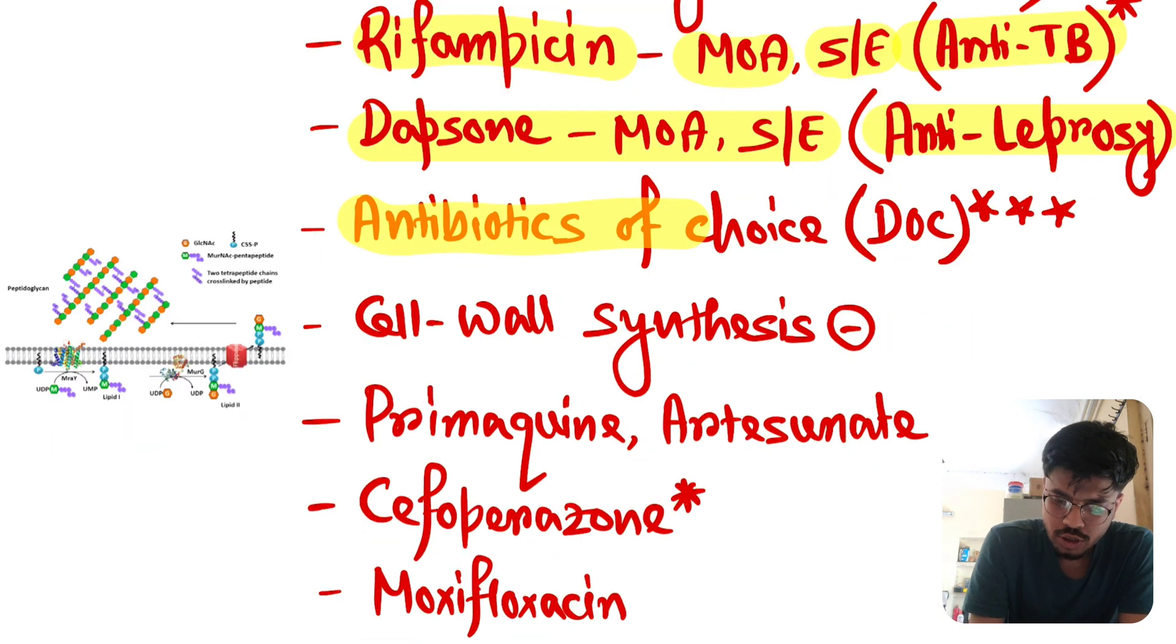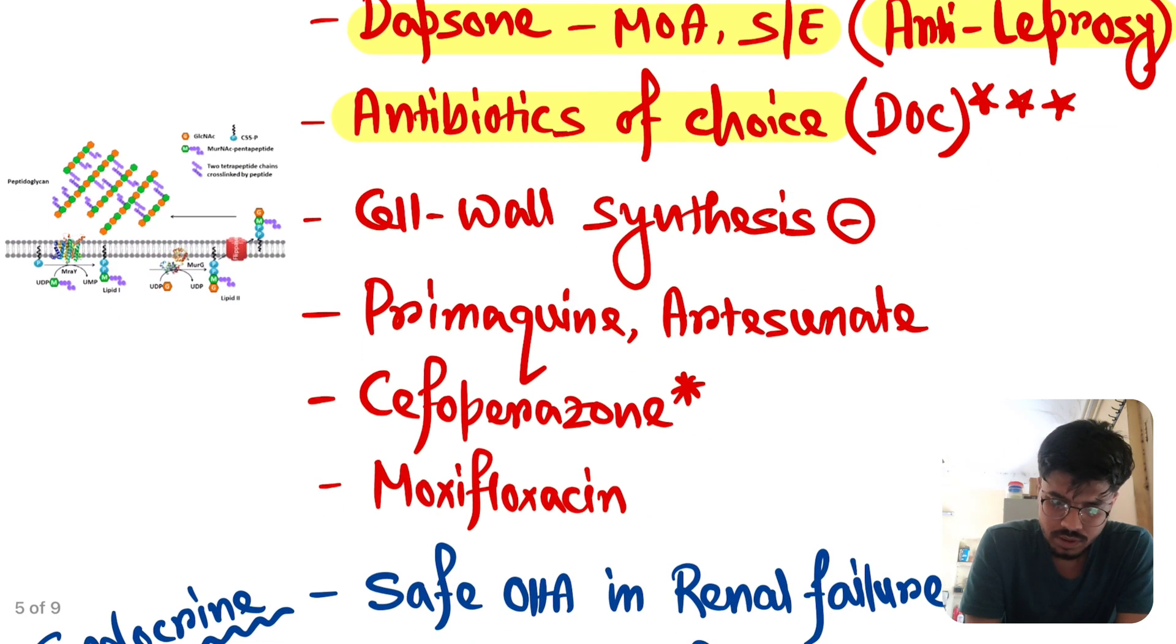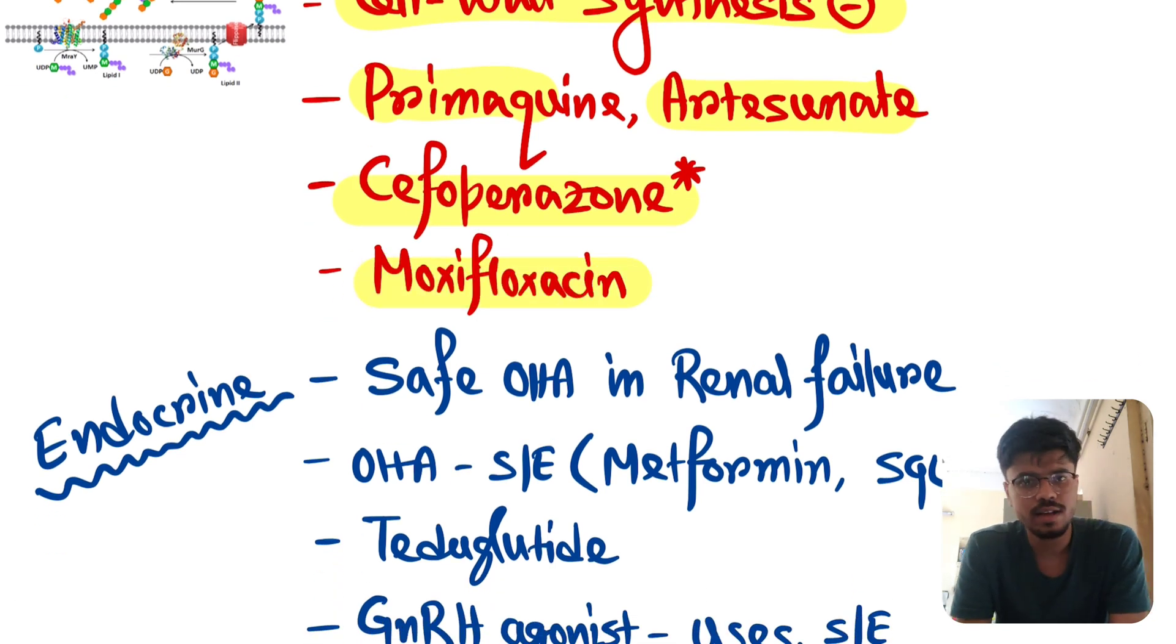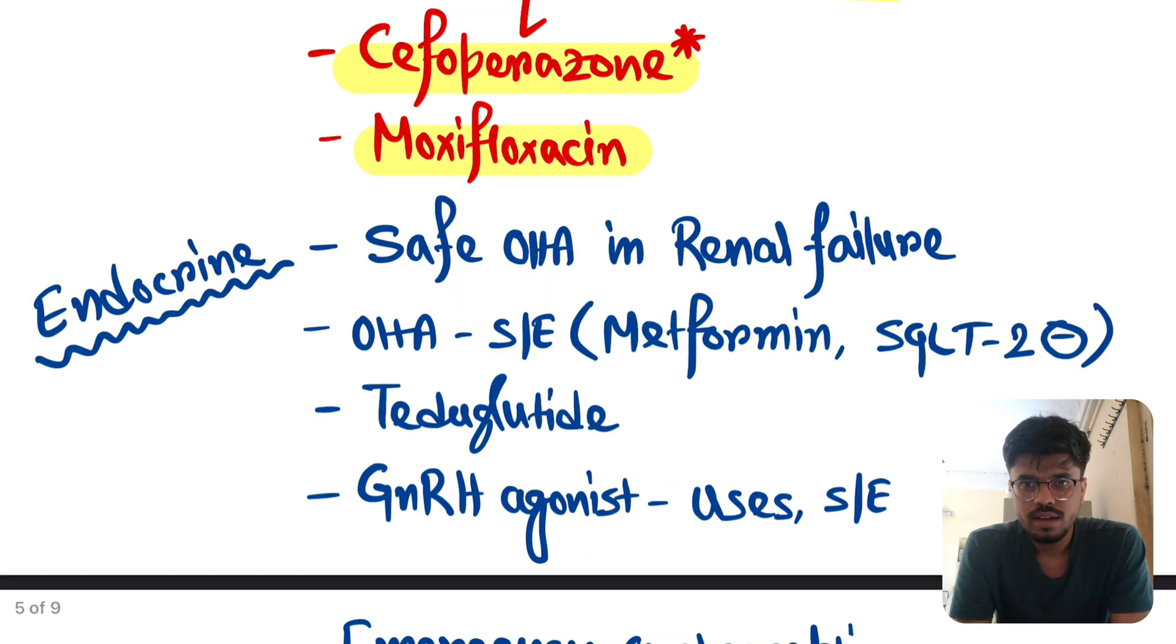Now antibiotics of choice. There is a huge list. I have shared this list in my telegram group. You can download the PDF from the telegram group. Cell wall synthesis inhibitor. Important drugs and mechanism of action. Primaquine, artesunate. Cefoperazone-sulbactam. Advantage and mechanism of action. Moxifloxacin and ofloxacin. Side effects and mechanism of action.